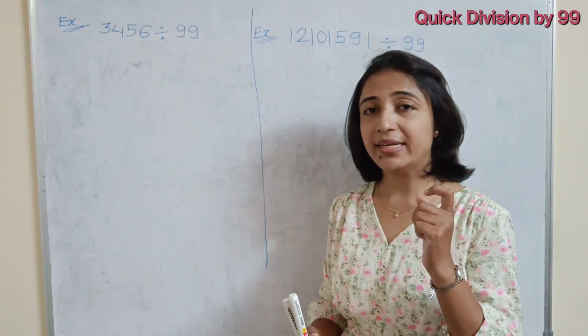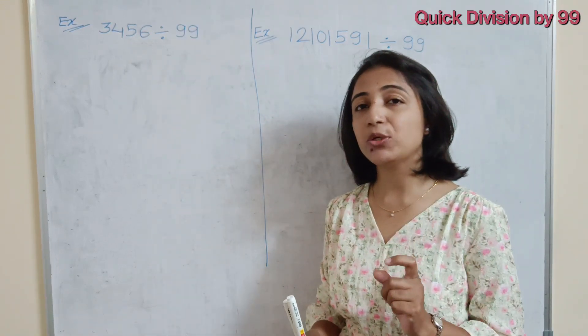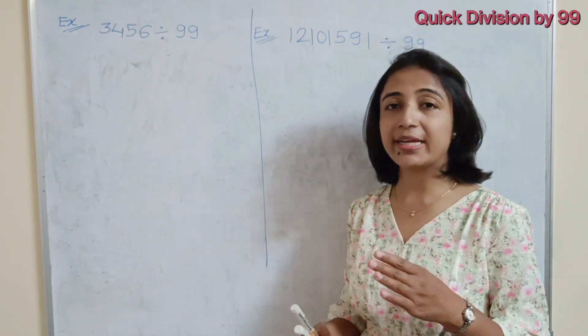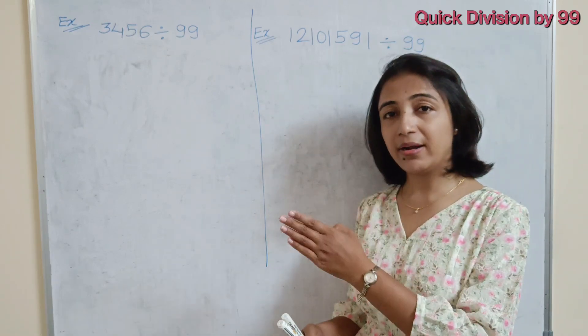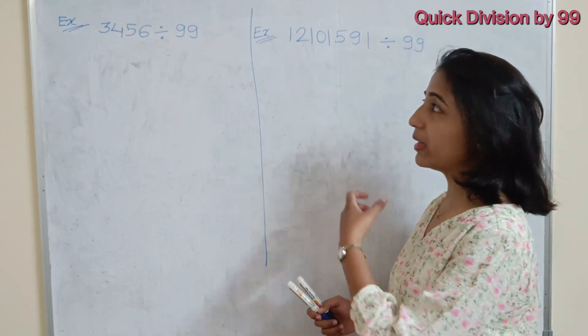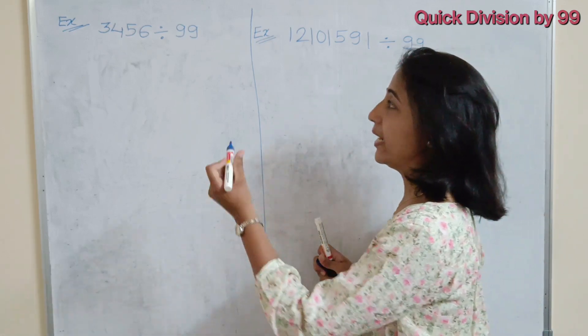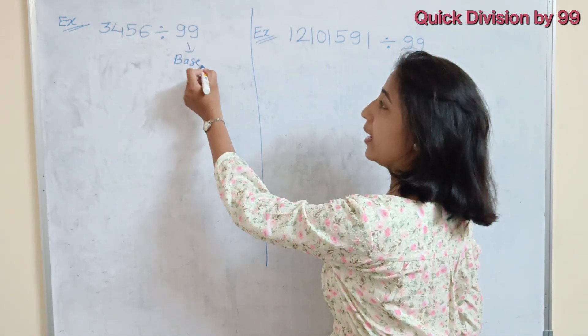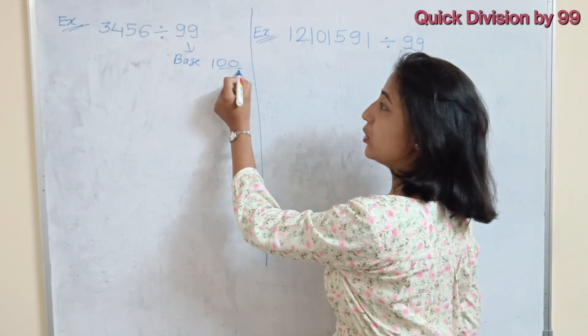Now, when we are saying 99, so 99 is near to 100, that means base number here is 100. Base, we are taking 10, 100, 1000, that is 10 raised to the power n. So if we are having 99, then 99 base is 100 and 100 contains 2 zeros.